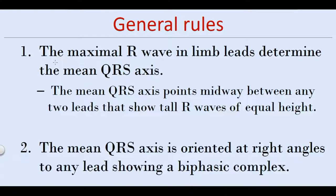There are two general rules for mean QRS axis calculation. The first is, the maximal R wave in limb leads determines the mean QRS axis. The mean QRS axis points midway between any two leads that show tall R waves of equal height.